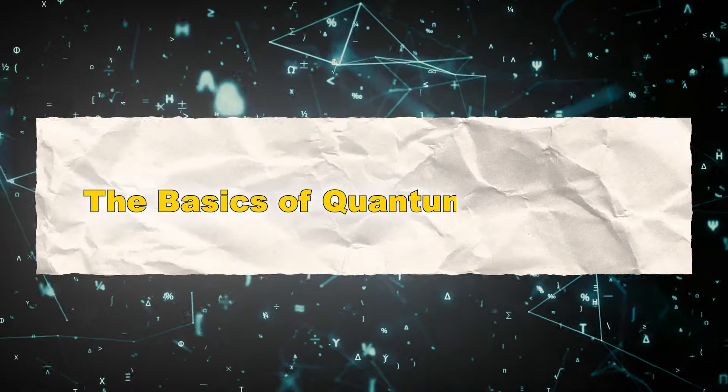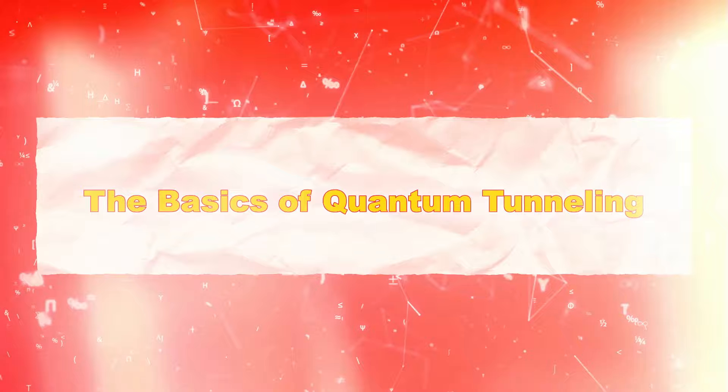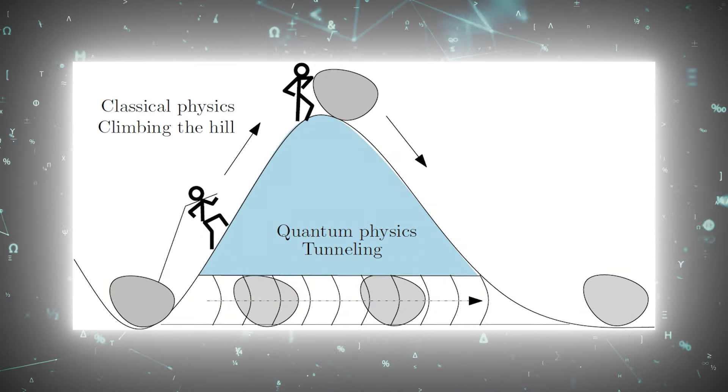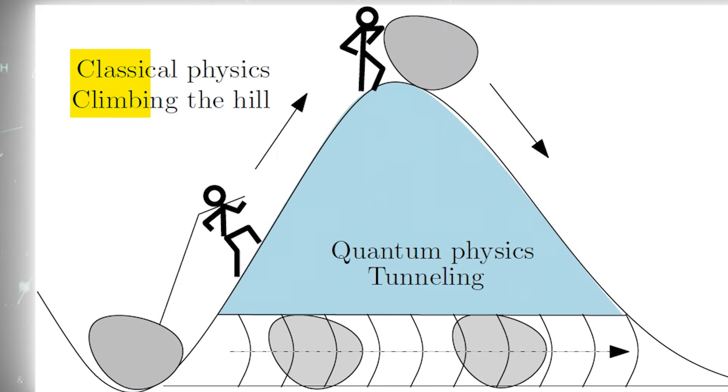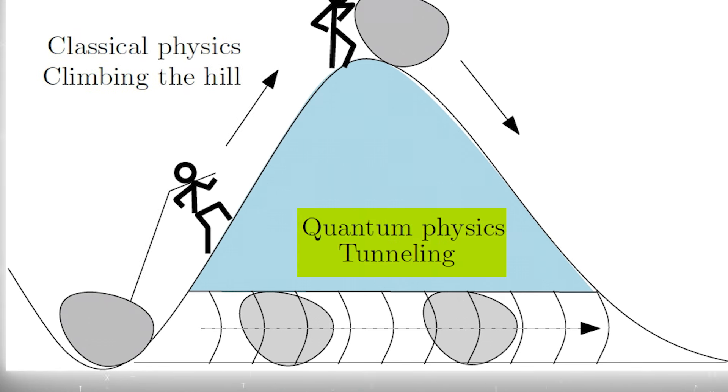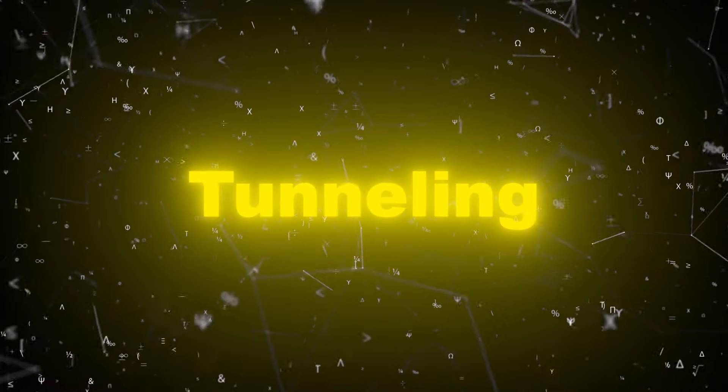The basics of quantum tunneling. Imagine a ball trying to roll over a hill. In classical physics, if the ball doesn't have enough energy, it simply can't make it over. But in the quantum world, particles can do something incredible. They can tunnel through barriers even if they don't have enough energy to climb over them. This is quantum tunneling.